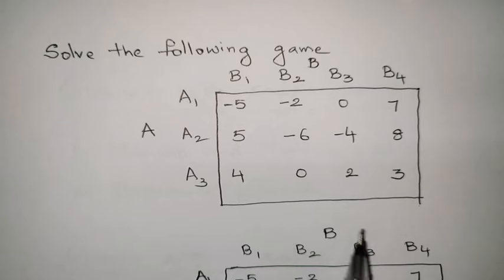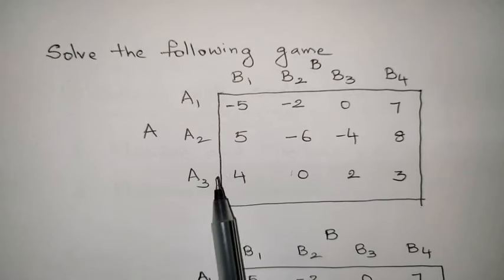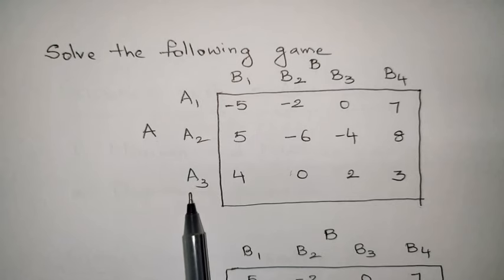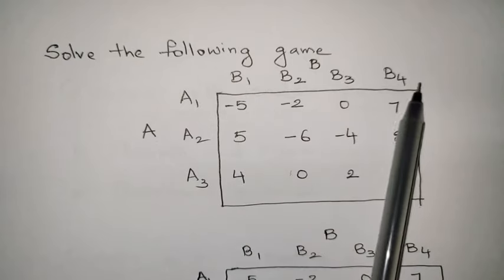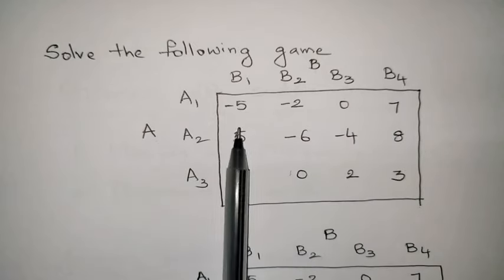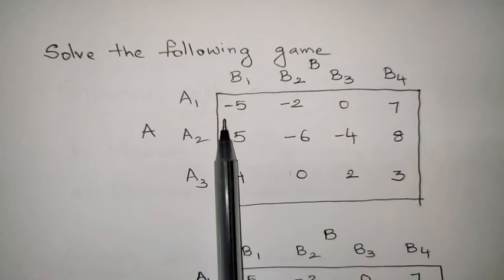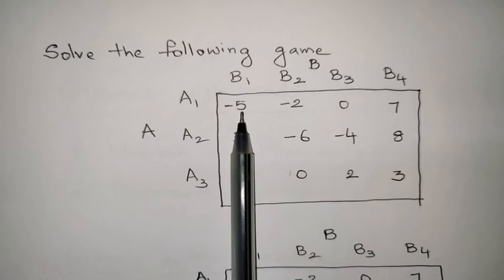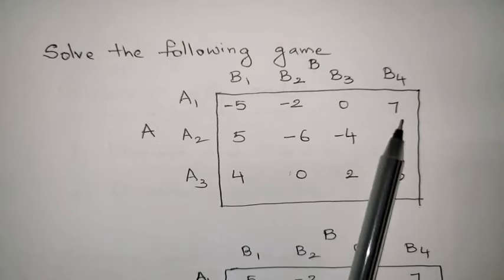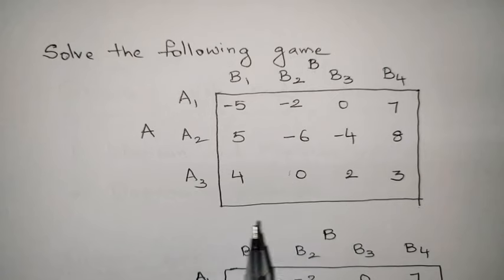Here is the payoff matrix that was directly given in order to solve the game. The number of players are 2 — player A and player B. Player A has 3 strategies: A1, A2, and A3. Player B has 4 strategies: B1, B2, B3, B4. The payoff values are given. So if player A selects strategy 1 and player B selects strategy 1, the payoff value is minus 5. Like that, if player A selects a different strategy and player B selects a different strategy, the payoff values are given, and this entire thing is called the payoff matrix.